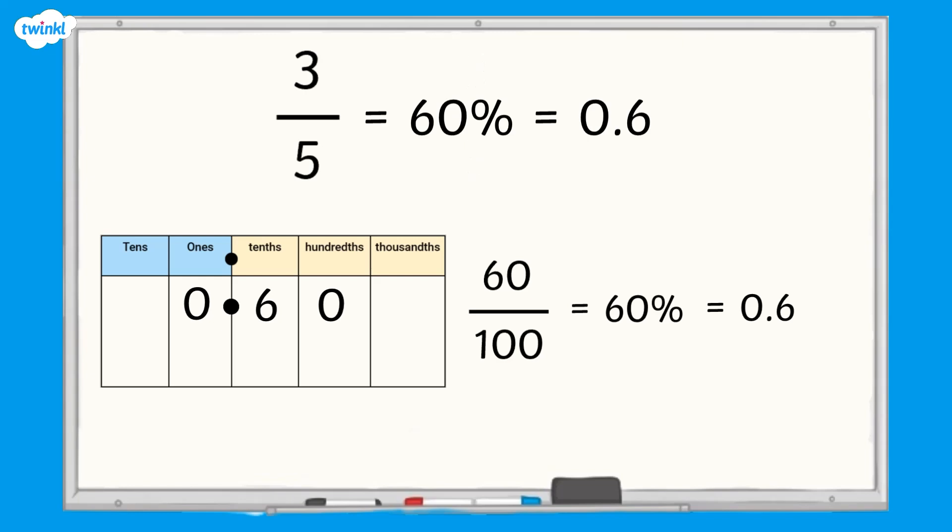To summarise, three-fifths is equivalent to sixty percent and zero point six.